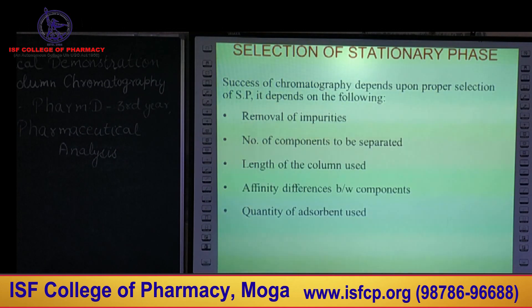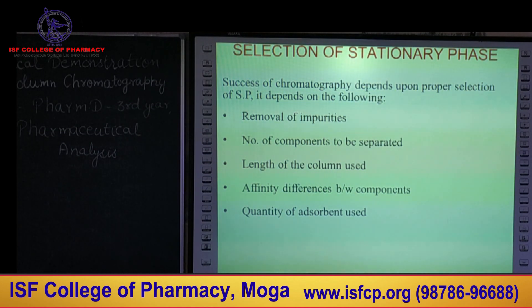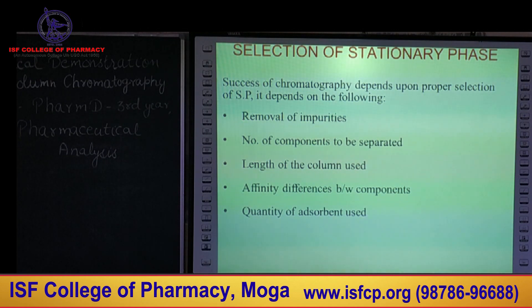Selection of stationary phase is based upon the following parameters: first, the number of components to be separated; the length of column used; and the affinity between the components and the quality of the adsorbent used.